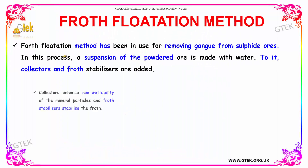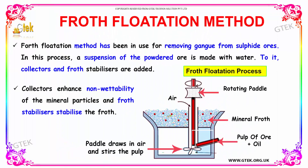The froth flotation method has been in use for removing the gangue from sulphide ores. In this process, a suspension of the powdered ore is made with water. Collectors and froth stabilizers are added to it.